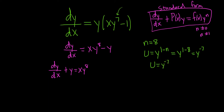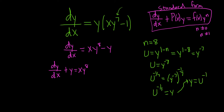Once we have u = y^(−7), we want to solve for y. To do that, raise both sides to the (−1/7) power. So y^(−7) raised to the (−1/7) gives u^(−1/7), and multiplying (−1/7)×(−7) gives 1, so y equals u^(−1/7). I'll put this in a box — we'll need it in a minute.